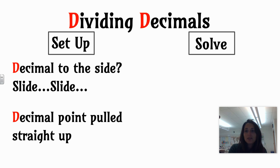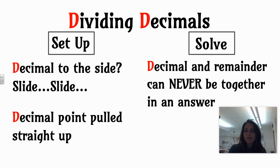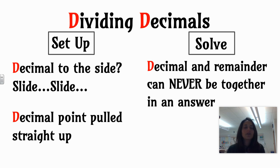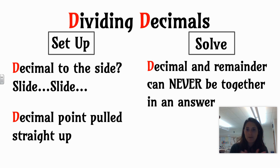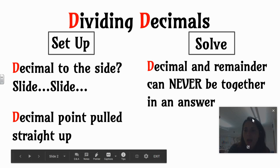When it comes to solving, it's also all about the Ds. The first D is that a decimal and a remainder can never be together in an answer. You will never get an answer to a division problem that has both a decimal point and a remainder — they can never, ever, ever be together.